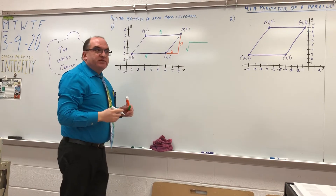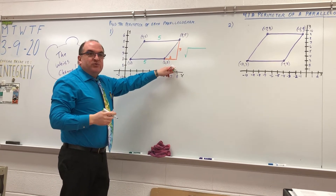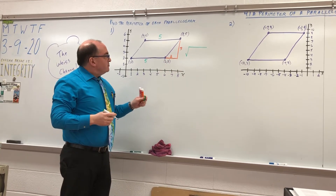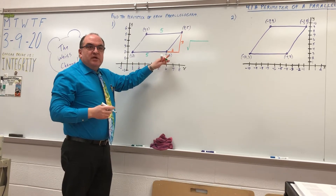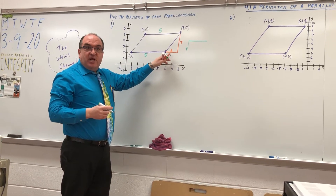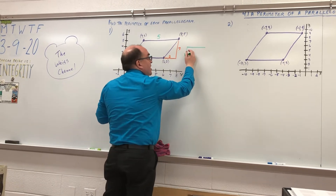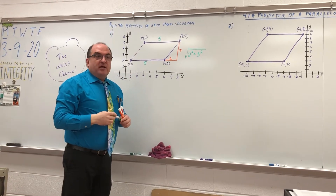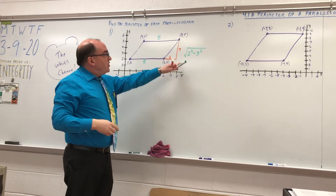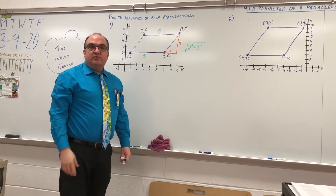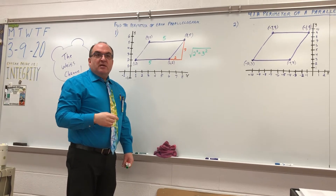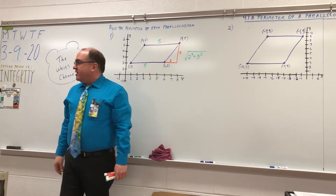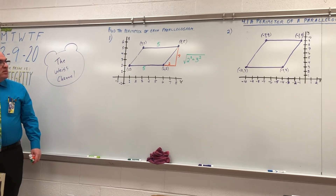Remember: a squared plus b squared equals c squared. So how did we do that on our calculators? We took the square root of what squared plus what squared? Square root of 2 squared plus 3 squared. On your calculator, do that. What do you get when you do the square root of 2 squared plus 3 squared, just like we did last week? 3.605.